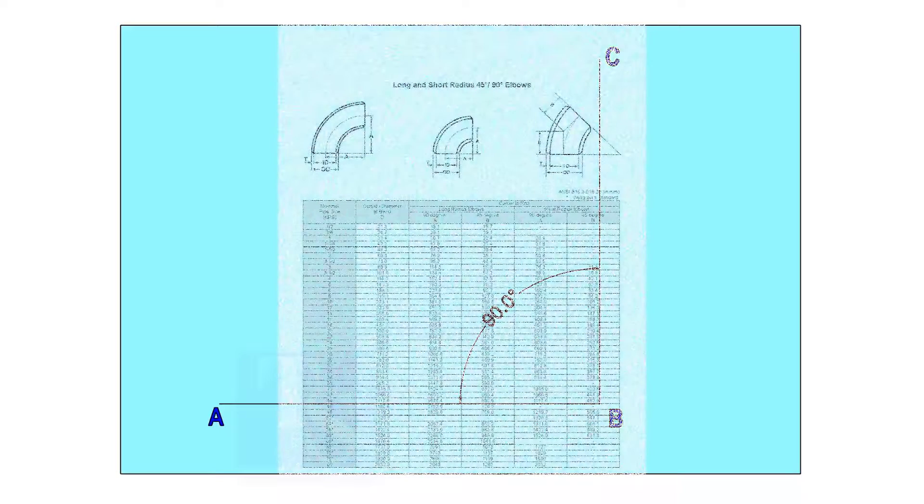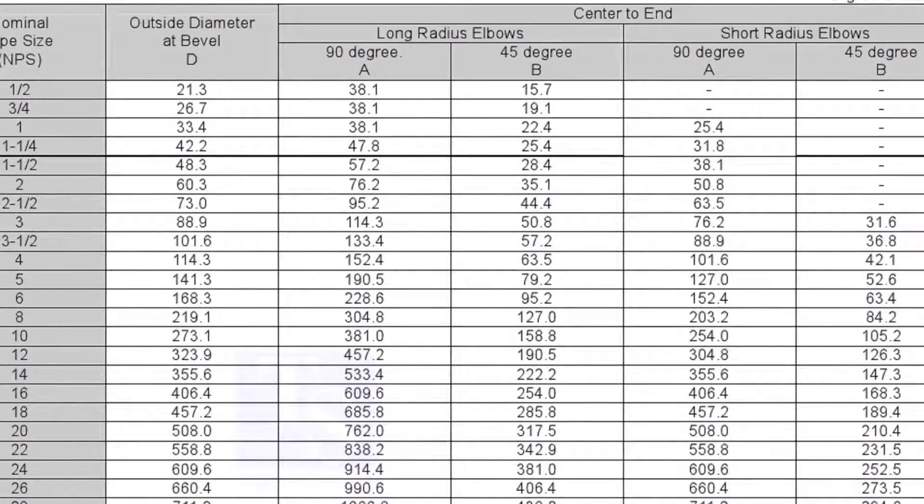Let us mark a 25-degree elbow on a 16-inch large radius elbow. Mark line AB and a perpendicular line BC. Let us check the center radius of 16-inch long radius elbow.